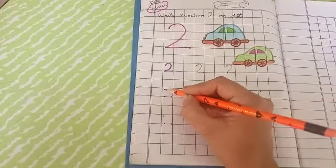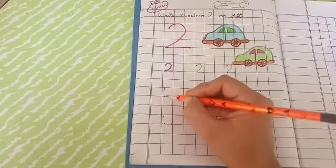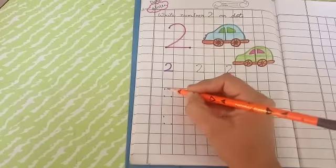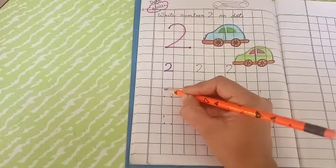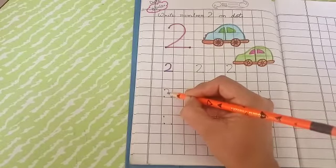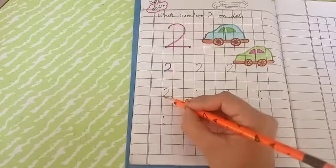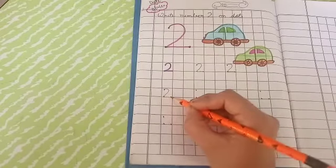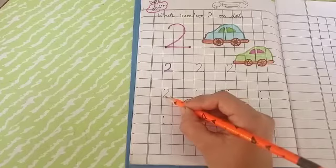Put the pencil on upper dot. Aap ko is dot se, is dot per a na hai. Okay. Take a curve and stop. Now, is dot se, is dot per. Like this. Okay kids.